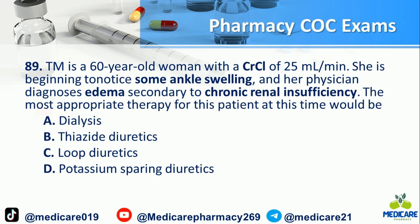Number 89: Kim is a 60-year-old woman with a kidney clearance of 25 ml per minute. She is beginning to notice some ankle swelling and her physician diagnosed edema secondary to chronic renal disease. The most appropriate therapy for this patient at this time would be: a. Glycerin. b. Thiazide diuretics. c. Loop diuretics. d. Potassium-sparing diuretics. The answer is C.